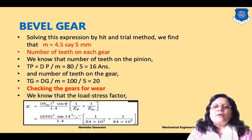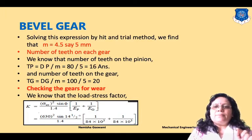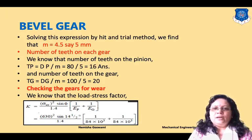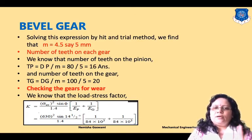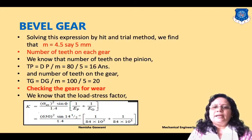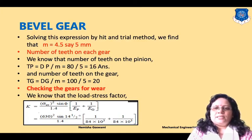Now we find the number of teeth. Number of teeth on pinion: tp = dp/m = 80/5 = 16 teeth. Number of teeth on gear: tg = dg/m = 100/5 = 20 teeth.